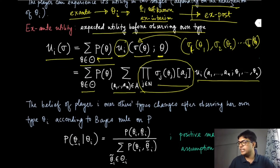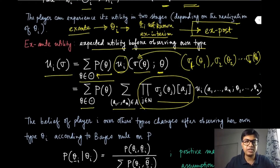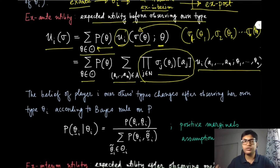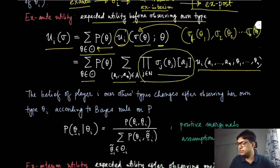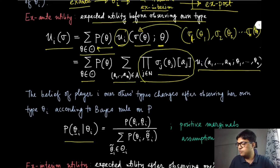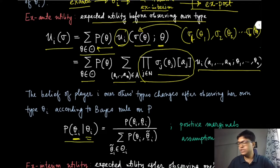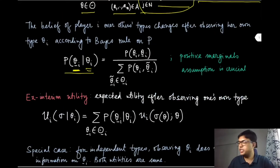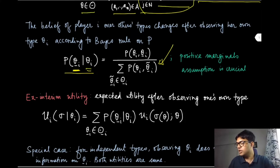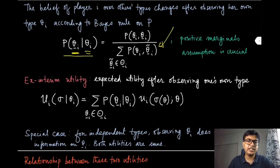Once in the x interim state — where you have observed your own type but not the other players' types — you can use the common prior to compute a posterior distribution via Bayes' rule: the probability that other players have type theta minus i, given that your own type is theta_i. In order to define this posterior, we need the denominator to be positive, which is why the positive marginal assumption is crucial.